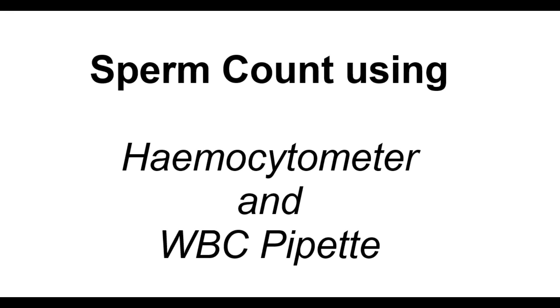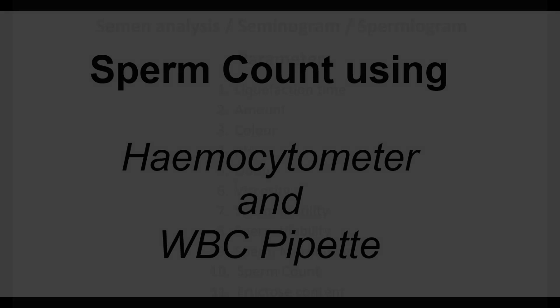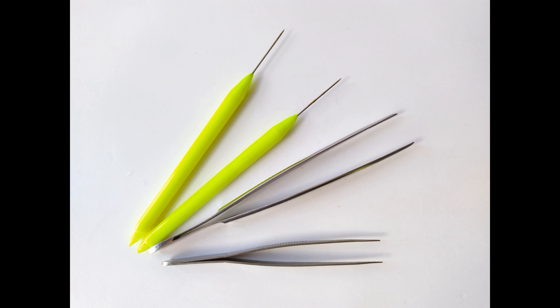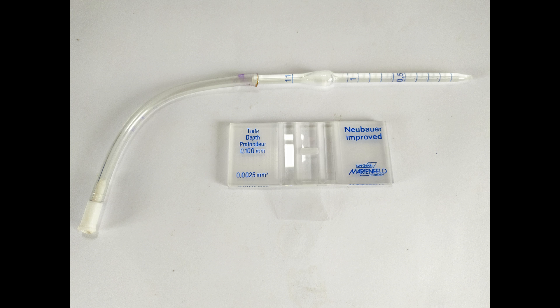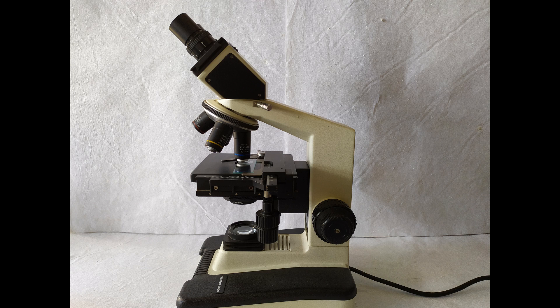In this video, we will be using the hemocytometer with WBC pipette to perform the sperm count. For this experiment, you will need the following: freshly collected human semen sample, thumb forceps and pins, hemocytometer counting chamber with WBC pipette, semen diluting fluid, and a compound light microscope.